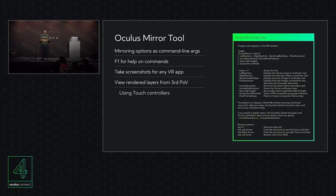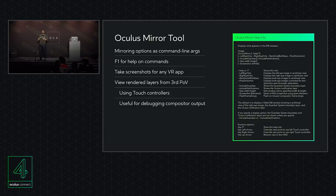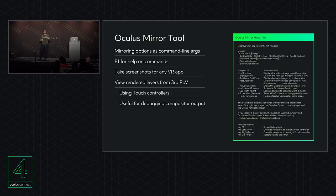The other cool developer-focused feature is the ability to see what the compositor is doing from a third-person point of view — the third person being your Touch controllers, whichever one you pick. You can use your Touch controller as an external camera showing what the compositor is doing. The application keeps rendering from the HMD position, but if your app makes heavy use of layers you can move your Touch controller around and see how those layers are in parallax. If you've lost track of a layer — maybe your math didn't work out — you can rotate the Touch controller to find it.